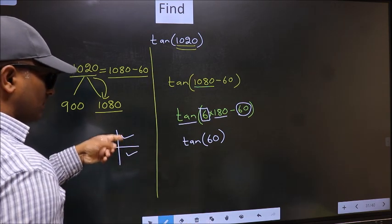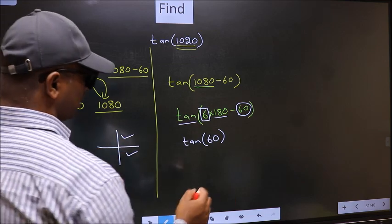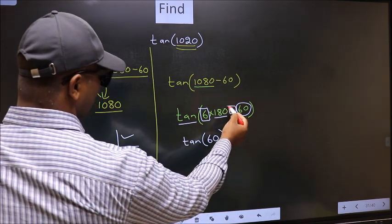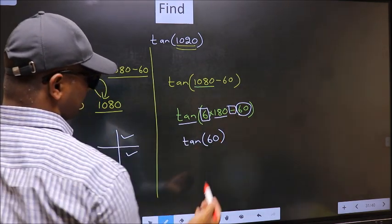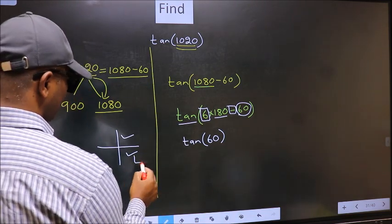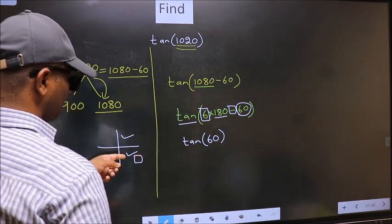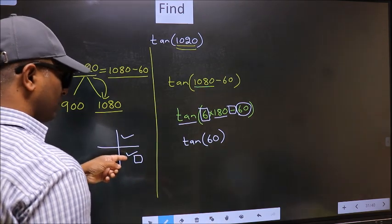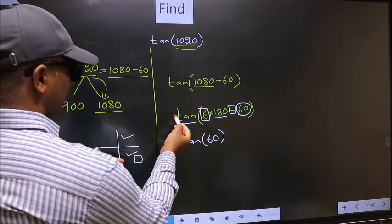So now, to select the quadrant, we should look at this symbol. Here we have negative. That means, angle lies in the 4th quadrant. And in the 4th quadrant, tan is negative.